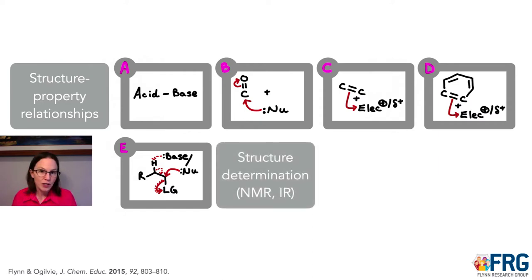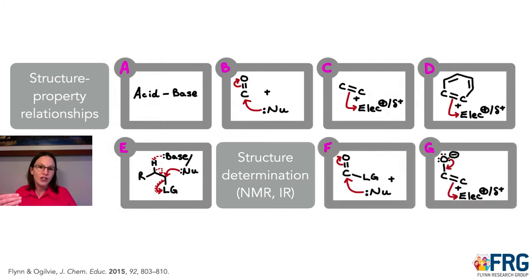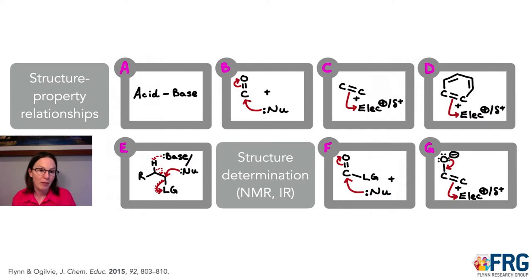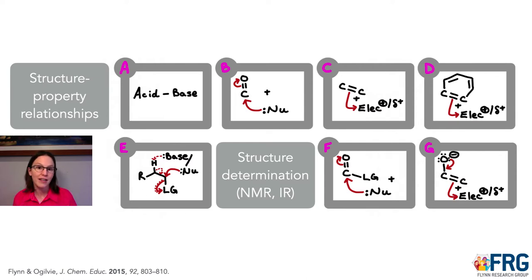Then we do structure determination through NMR and infrared, and then the second semester of organic 2 wraps up by linking back to earlier patterns, adding to them, and knitting in some new ideas. That would include, for example, the pi-electrophiles with leaving groups, the carboxylic acids and analogs, as well as the acetals and analogs, and then the souped-up pi-nucleophiles which include enol, enolate, and analog chemistry reacting with electrophiles that students have seen throughout the course.